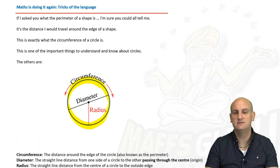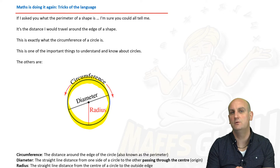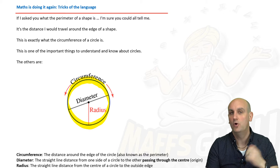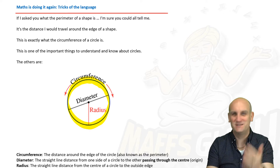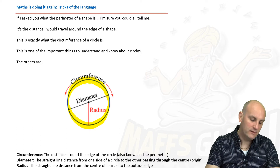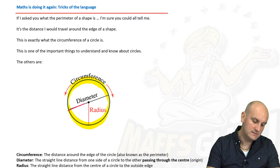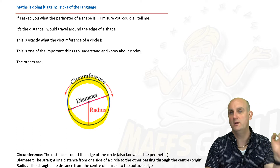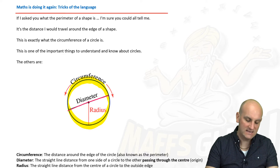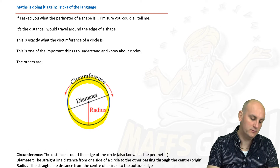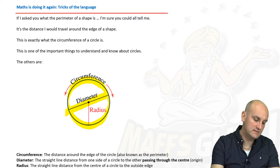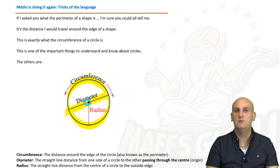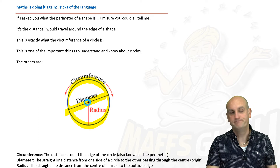To find the circumference you need to know two things: either the diameter or the radius. The diameter is the distance across a circle from one side to the other, but it has to pass through the centre. This is the diameter here — it goes from one side to the other and passes through the centre. We generally mark the centre with a big dot.